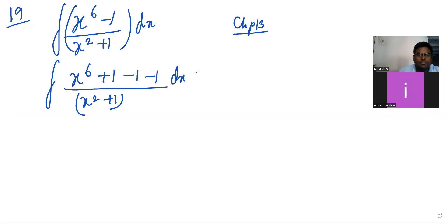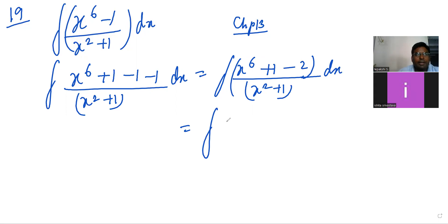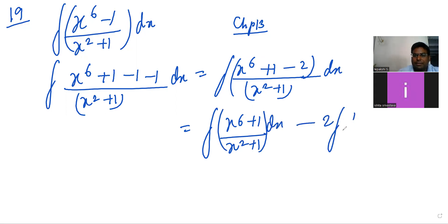Into dx. So now arranging it, it is integration of (x⁶ + 1 - 2) divided by (x² + 1) into dx. Next, it becomes integration of (x⁶ + 1) divided by (x² + 1) into dx, minus 2 times integration of 1 upon (x² + 1) into dx.